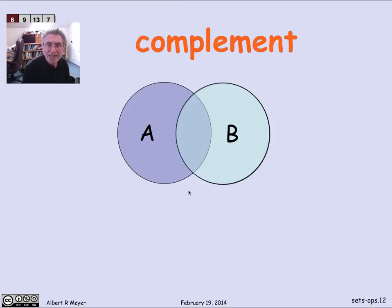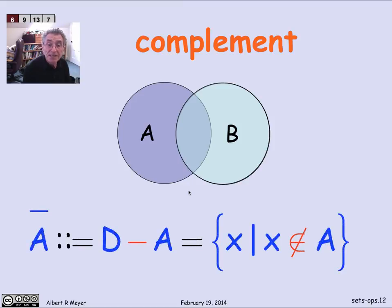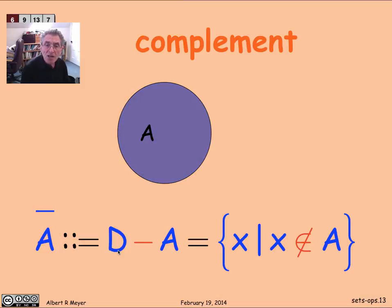And a special case of the minus operation or the difference operation is complement. When you know the overall domain that you expect all your sets to be part of, then you can define a complement to be everything that's not in A, the set of x such that x is not in A, where x is understood to be ranging over some domain of discourse. So if we're going to picture that, we're looking at the whole orange region, all of the stuff that's not in A, if we think of the whole slide as representing the domain of discourse D.